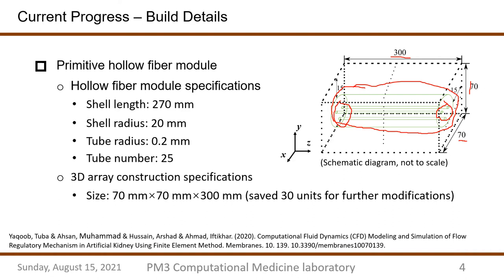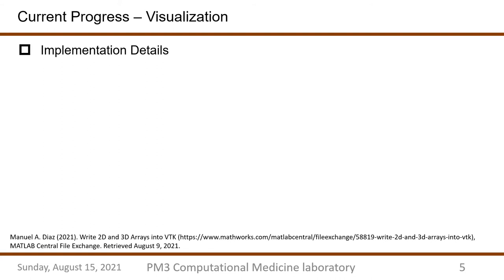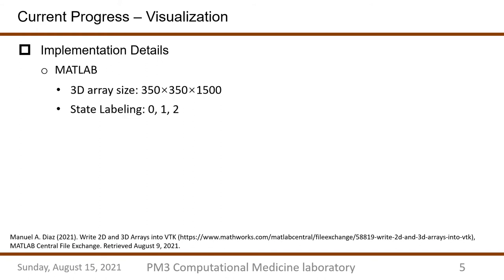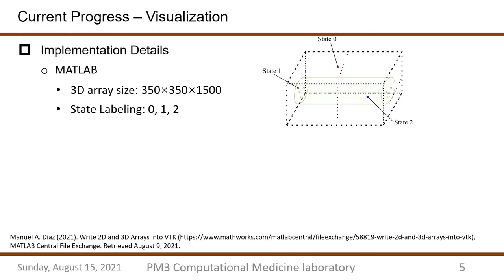All the array generation codes are completed in MATLAB. As for implementations, the 3D array has 0.2 gaps for all coordinates. That is to say, the actual array size is 350 by 350 by 1500. For visualizations, there are 3 possible states for elements in the array, numbered from states 0, 1, and 2. State 0 is the elements not covered by the shell. State 1 is the elements covered by the shell but outside the tubes. And state 2 is the elements inside the tubes.